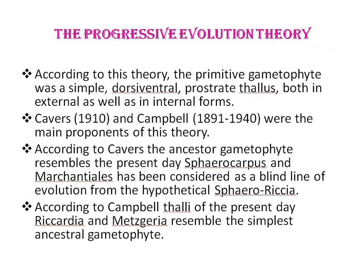First, we will discuss the progressive ablation theory. According to this theory, the primitive gametophyte was a simple dorsiventral, prostrate thallus, both in external as well as in internal forms. Cavers and Campbell were the main proponents of this theory. The evolution of gametophytes took place from liverworts to mosses in an ascending series of gradually increasing complexity with regard to the organization of internal tissues and sex organs.